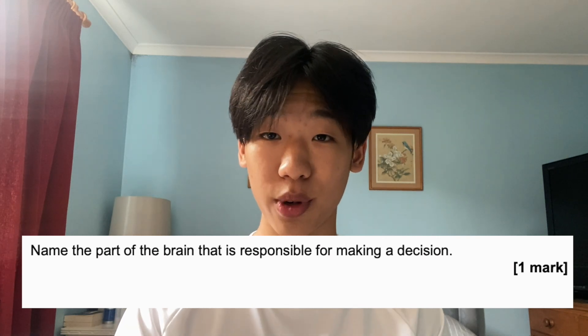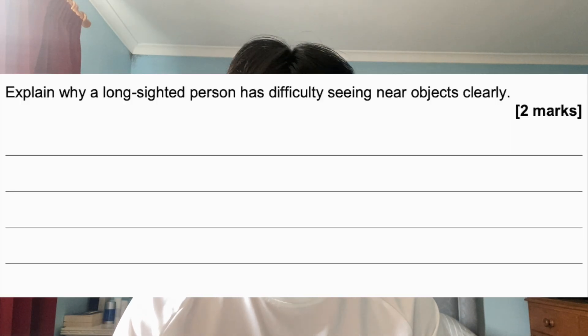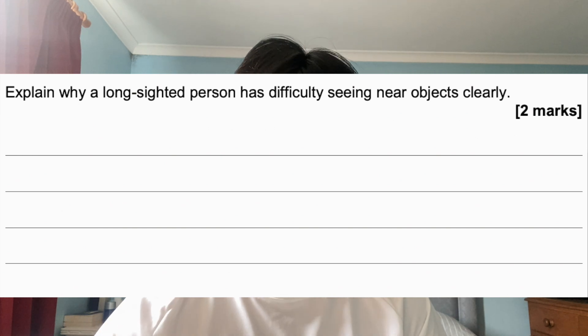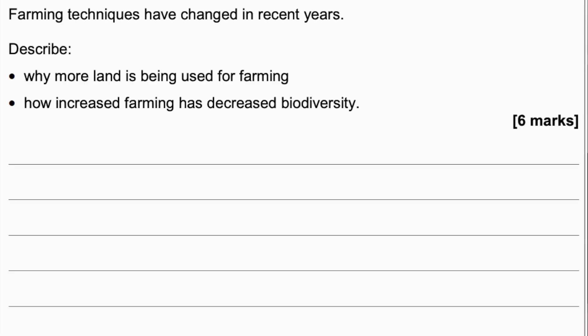Question three: explain why a long-sighted person may have difficulty seeing near objects clearly — worth two marks, make sure you actually explain why. Question four: describe three differences between mitosis and meiosis — three marks. Question five: describe the structure of a nucleotide — worth four marks. Question six (six marks): farming techniques have changed in recent years — describe why more land is being used for farming and how increased farming has affected biodiversity. You can write in bullet points as long as you hit the mark scheme points.